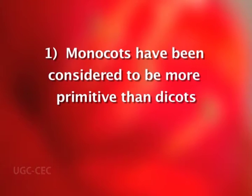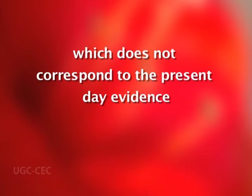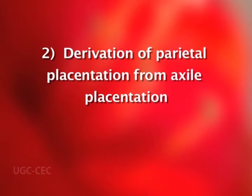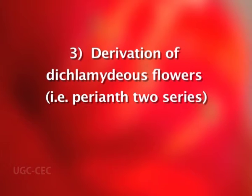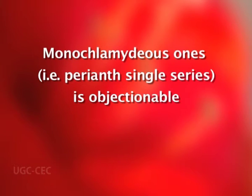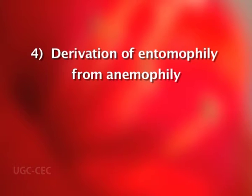Demerits of the Engler and Prantl system: First, monocots have been considered more primitive than dicots, which does not correspond to present-day evidence. Second, the derivation of parietal placentation from axile placentation is questionable. Third, the derivation of dichlamydeous flowers (perianth in two series) from monochlamydeous ones (perianth in a single series) is objectionable. Fourth, the derivation of entomophily from anemophily is also questionable.